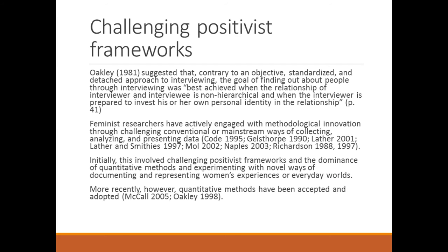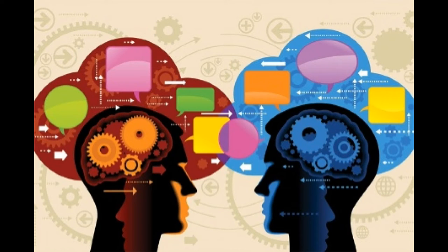Oakley suggested that contrary to an objective, standardized, and detached approach to interviewing, the goal of finding out about people through an interview was best achieved when the relationship between interviewer and interviewee is non-hierarchical and when the interviewer is prepared to invest his or her own personal identity in the relationship. If you think about doing an interview, the person asking questions doesn't give up anything about themselves — it's the person talking who gives up all the information. This creates a power relationship where one gives and one takes. Feminists questioned whether that was an ideal way to get information from people — basically said you can't just extract it from them like you're mining from the ground. They're people, and you have to interact with them as people.